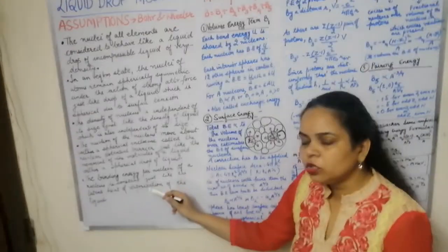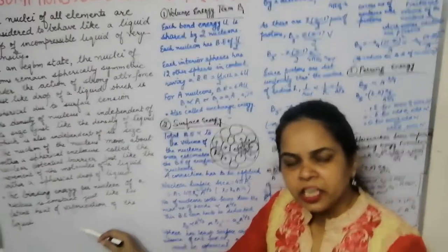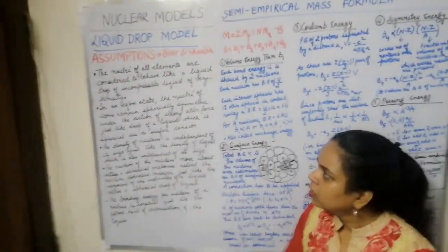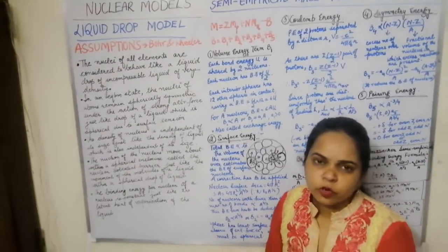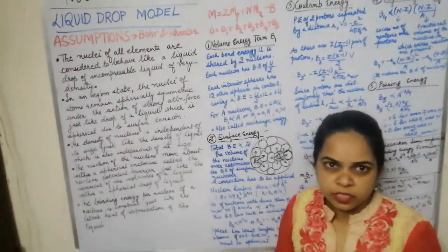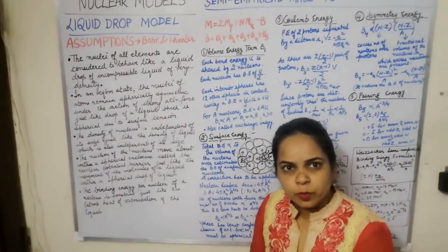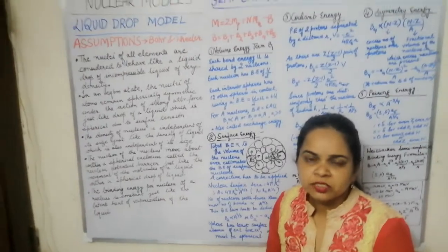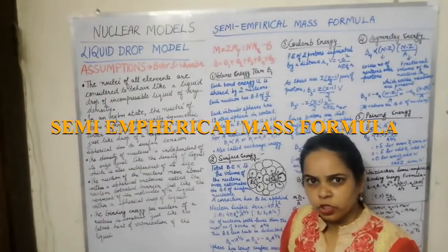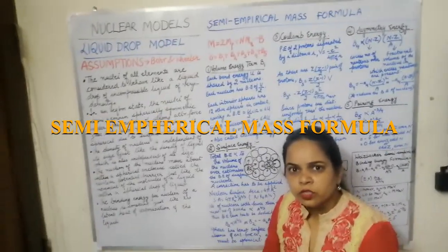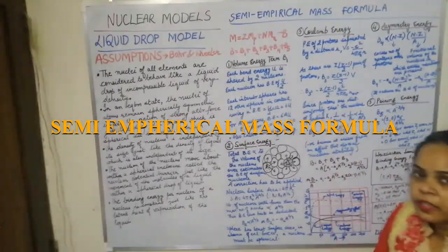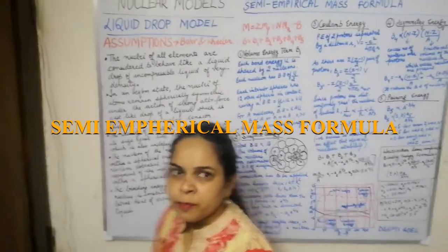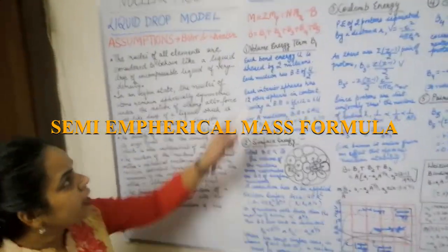The binding energy per nucleon in the nucleus is analogous to the latent heat of vaporization, and both are constant. These were the assumptions of the liquid drop model suggested by Bohr and Wheeler. With this model we could calculate the binding energies as well as the mass of the nucleus. According to these assumptions we can calculate the semi-empirical mass formula.